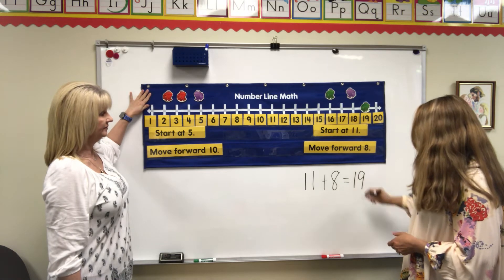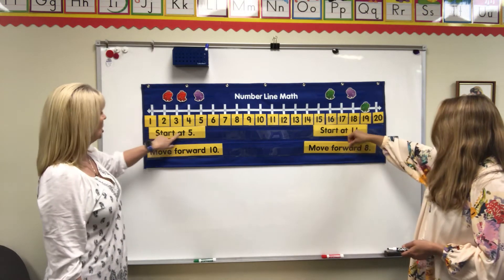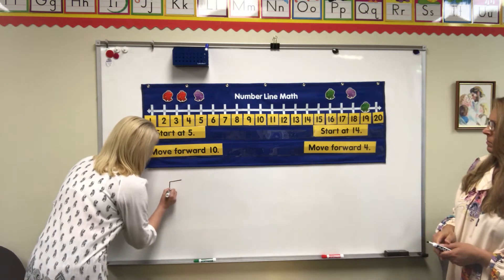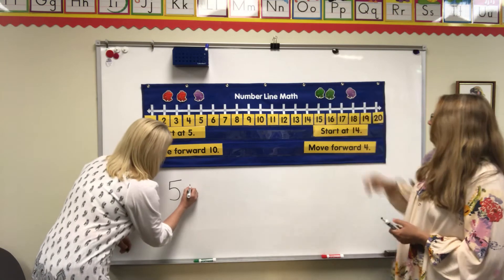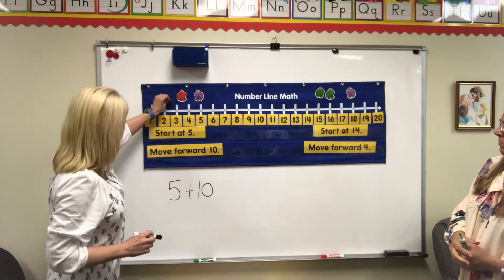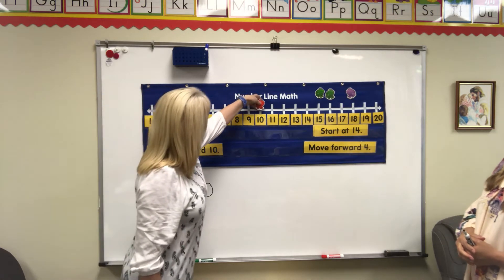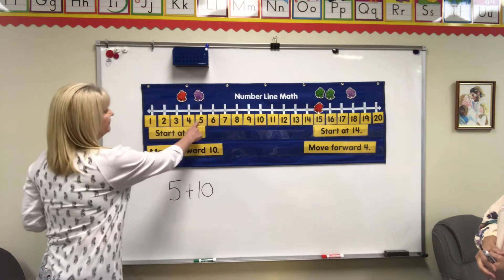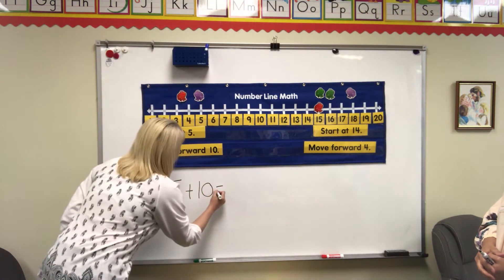Okay, moving right along — mine is telling me to start at 5, so I'm going to start at 5. It says move forward 10, that's a lot! So I'm going to put plus 10 and we're going to find out where that puts us. Starting at 5, going 1, 2, 3, 4, 5, 6, 7, 8, 9, 10. So starting at 5, adding 10 puts me at 15 — that's right, it equals 15!